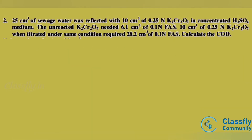Second problem: 25 cm³ of sewage water was reacted with 10 cm³ of 0.25 N K2Cr2O7 in concentrated sulfuric acid medium. The unreacted K2Cr2O7 needed 6.1 cm³ of 0.1 N FAS. 10 cm³ of 0.25 N K2Cr2O7 when titrated under the same conditions requires 28.2 cm³ of 0.1 N FAS.